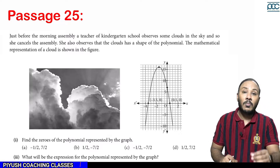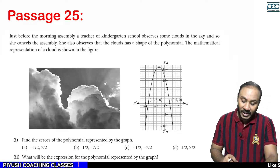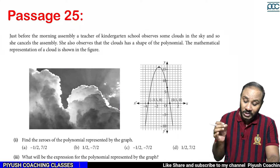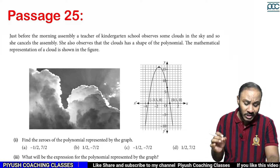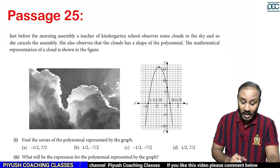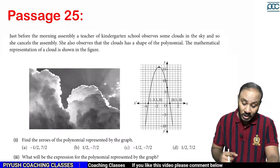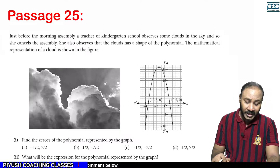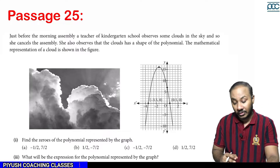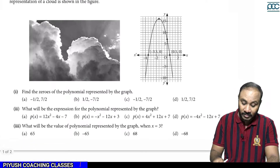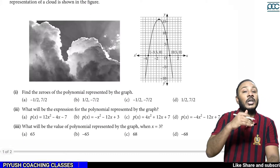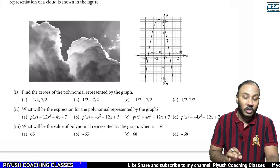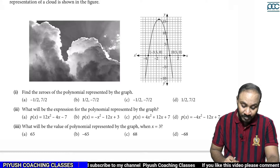Just before the morning assembly, a teacher of a kindergarten school observed some clouds in the sky and cancelled the assembly. You also observe that the clouds have the shape of a polynomial. The mathematical representation of the cloud is shown in the figure — the cloud's shape is shown in a parabolic form, which is represented in the graph.